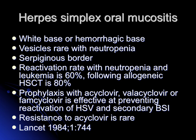Regarding HSV and mucositis: these patients rarely develop blisters because they lack white blood cells, so there is not much inflammation — but you may see an ulcer with irregular borders and a white or red base. The reactivation rate with neutropenia and leukemia can be as high as 60%, and following stem cell transplant as high as 80%. So prophylaxis is essential. Resistance to acyclovir remains rare; the mechanism involves thymidine kinase.